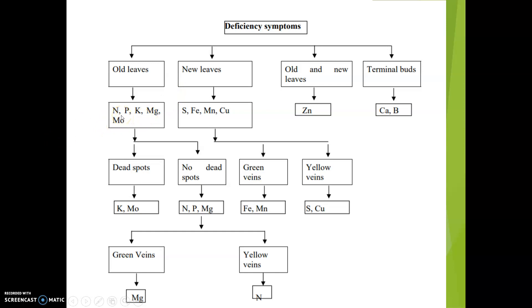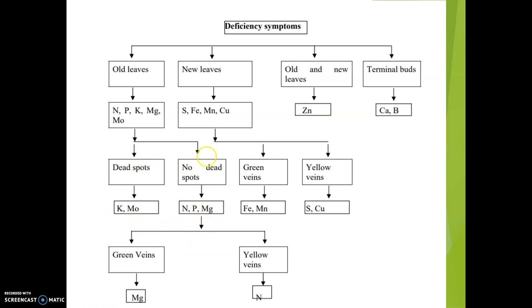The deficiency symptoms of nitrogen, phosphorus, potassium, magnesium, and molybdenum will occur in all the leaves. If it is accompanied by dead spots, those symptoms are caused by potassium and molybdenum. If there are no dead spots, the symptom is due to deficiency of nitrogen, phosphorus, or magnesium. In case of magnesium, there will be green veins with interveinal chlorosis — the veins remain green while the space between the veins shows yellowing.